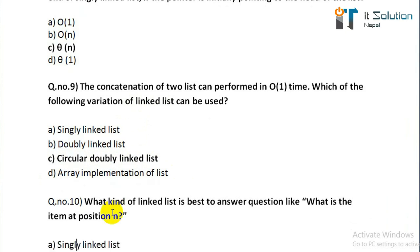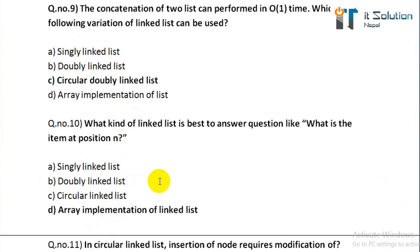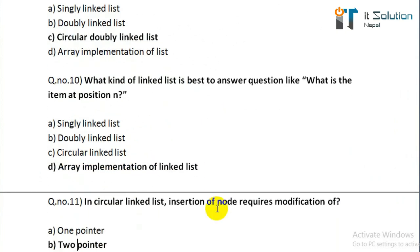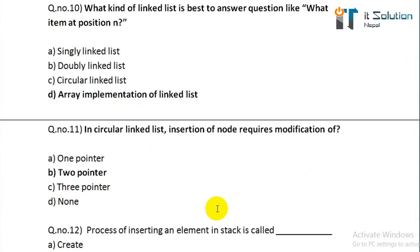Question number ten: what kind of linked list is best to answer queries like 'what is the item at position m'? Its correct answer is option D, array implementation of linked list. Question number eleven: in a circular linked list, insertion of a node requires modification of? Its correct answer is B, two pointers.